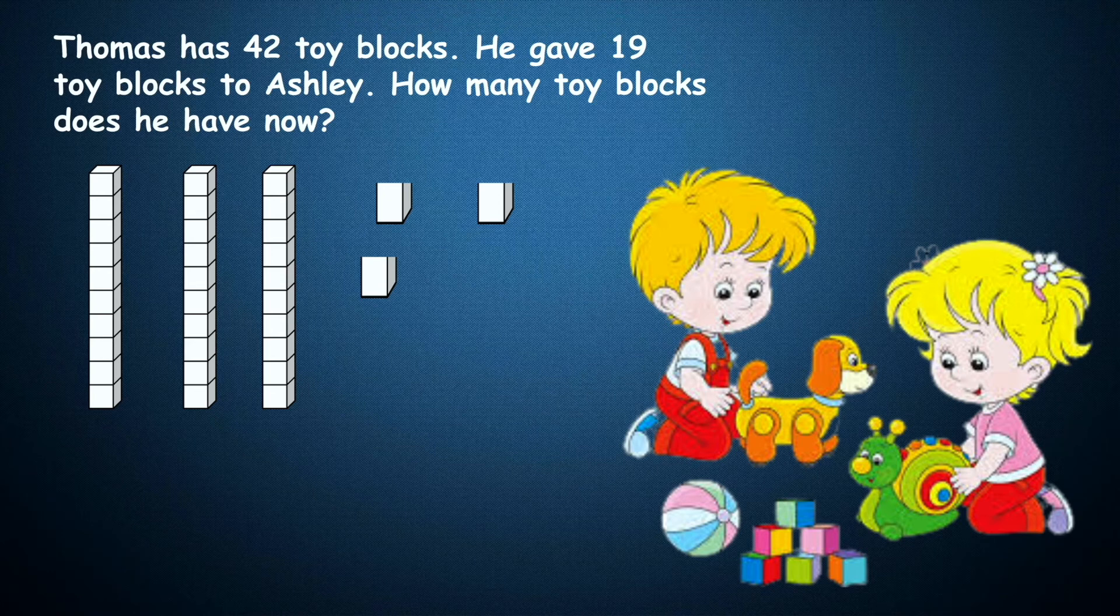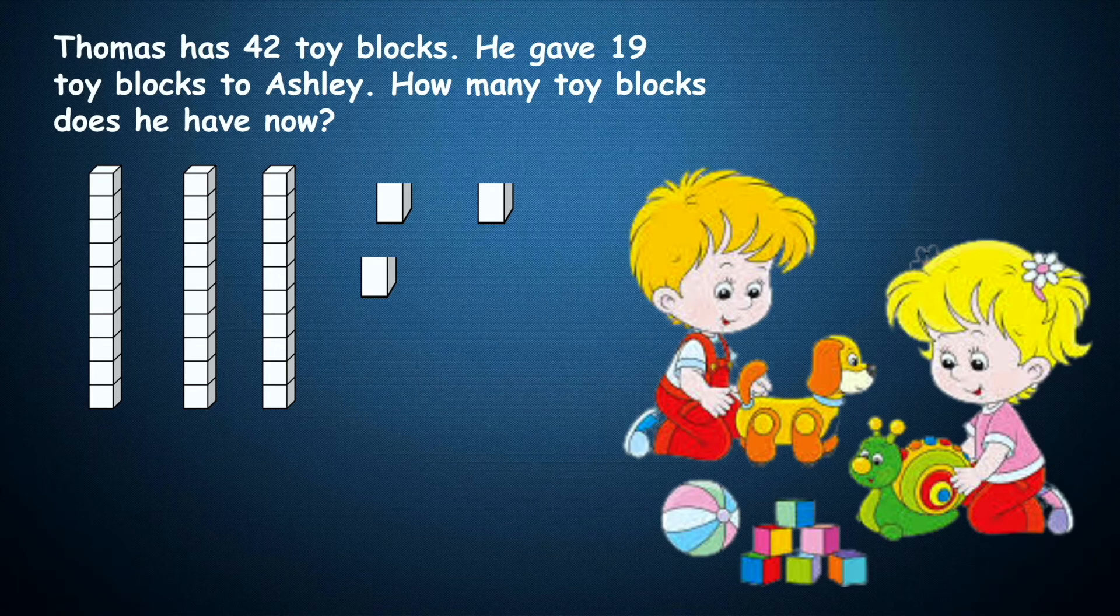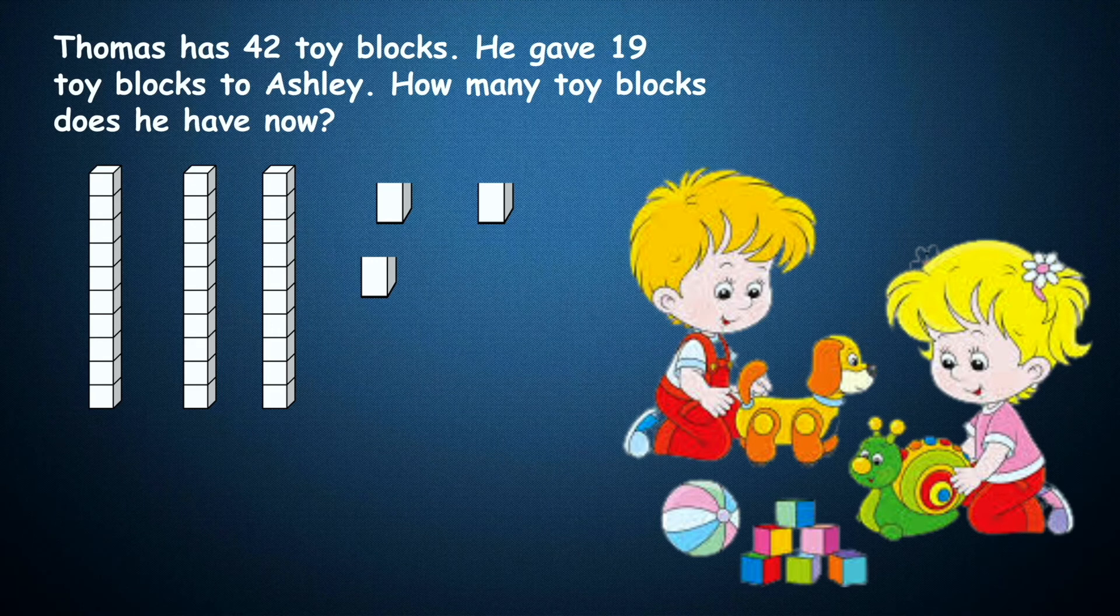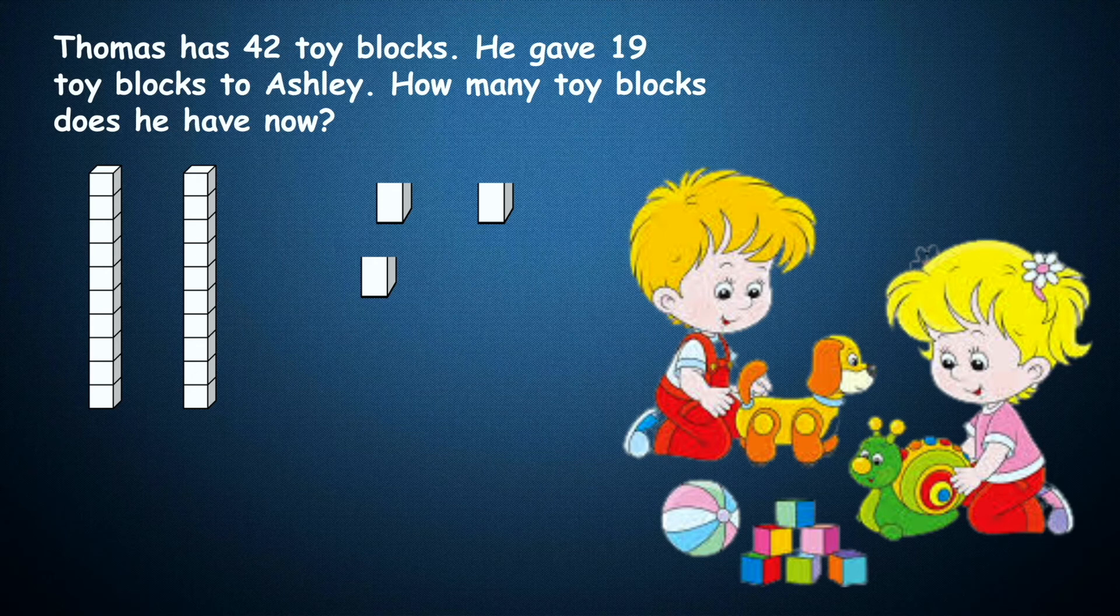Now we have only three ones left but we also need to take away one ten because 19 has one ten. So let's get it. So when we took the one ten away and the nine ones, let's see how much do we have now.